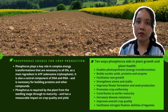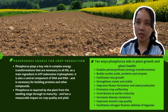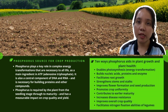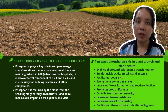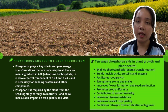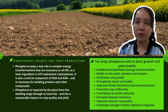There are 10 ways phosphorus aids in plant growth and plant health. Firstly, it enables photosynthesis and energy transformation. Second, it builds nucleic acids, proteins and enzymes. Third, it facilitates root growth. Fourth, it strengthens stems and stalks. Fifth, it improves flower formation and seed production. Sixth, it promotes crop uniformity. Seventh, it contributes to earlier maturity. Eighth, it increases disease resistance. Ninth, it improves overall crop quality. And lastly, it facilitates the nitrogen-fixation abilities of legumes.